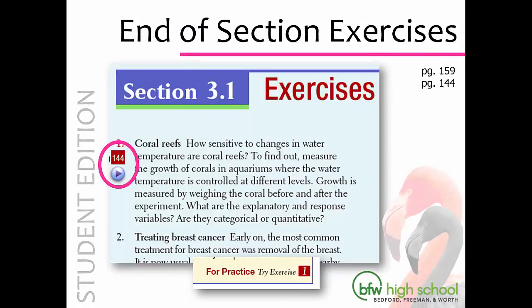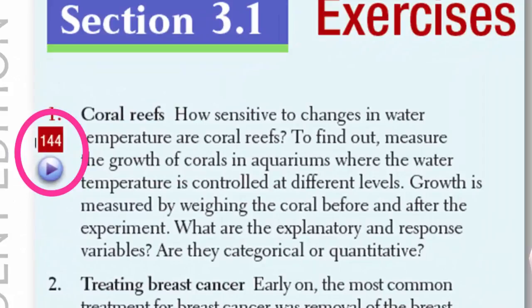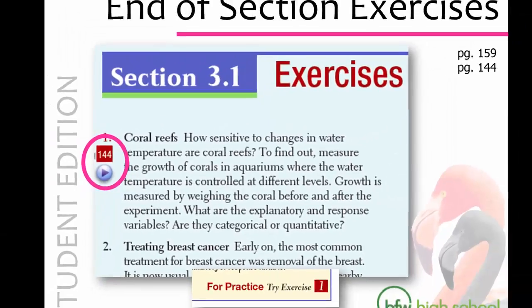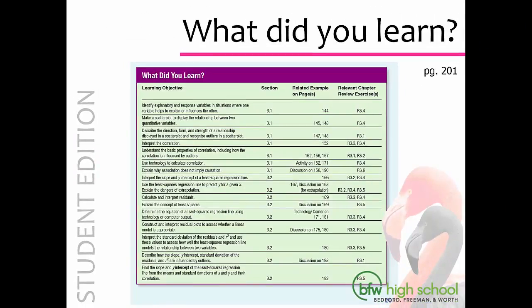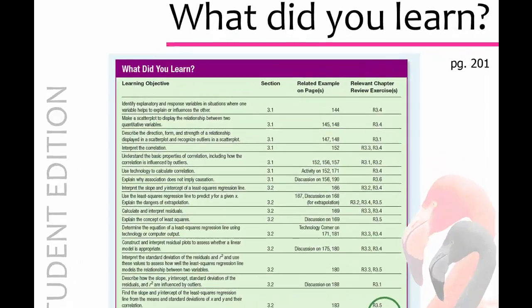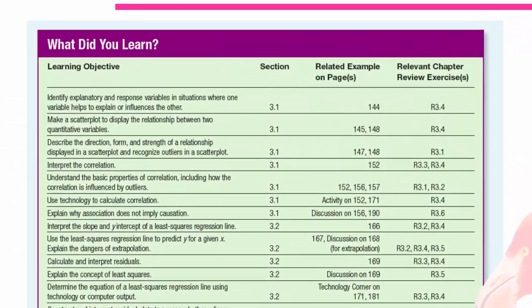There are also end-of-section exercises to make sure that your students have understood what they have learned. Notice the page reference and the play button next to question 1 of the section 3.1 exercises. If your students are struggling with a problem, they can flip back to the referenced page and look at a worked-out example, or they can click the play button and go to the Book Companion site to watch a video explaining the mathematics. The "What Did You Learn" box will be extremely important as your students prepare for the AP exam. It identifies the learning objectives studied within that chapter, shows what section they can find them in, and also shows where they can find a related example and chapter review exercises.